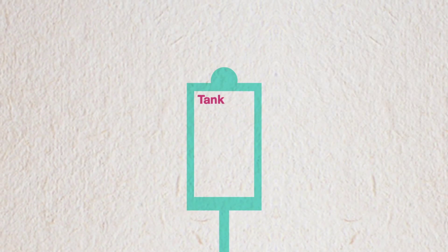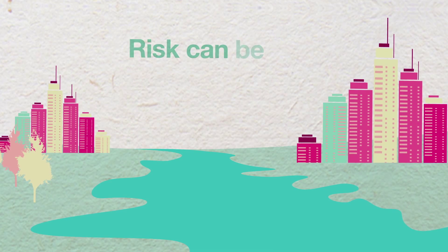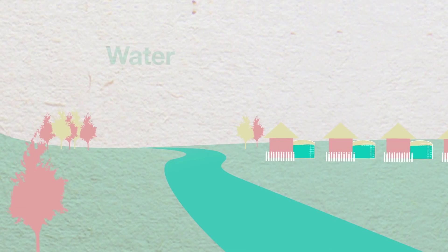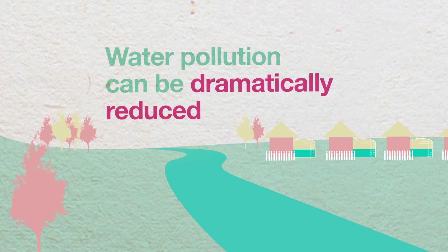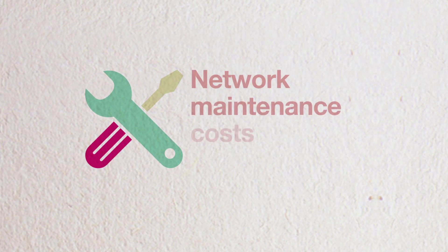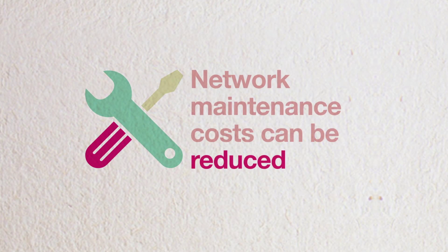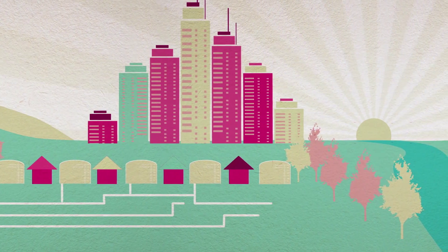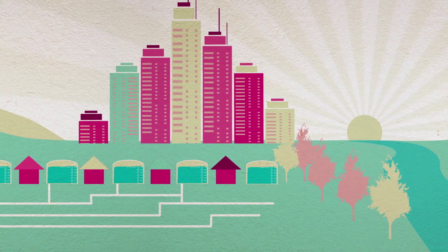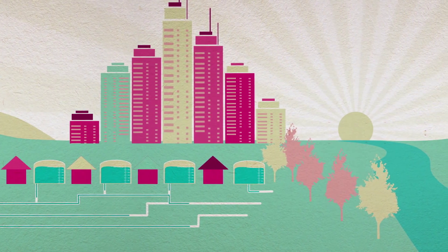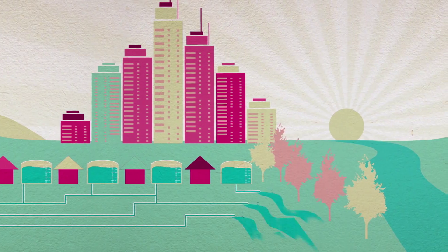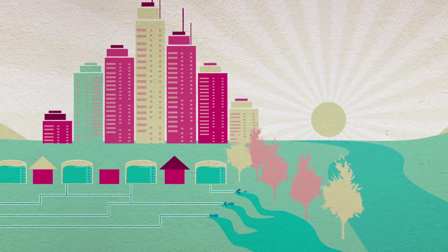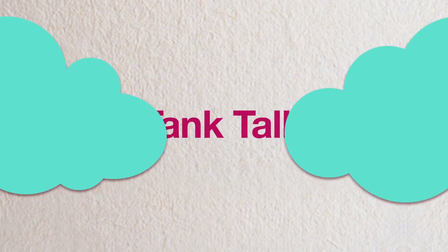By using TankTalk, risks of flooding and damage through stormwater peak flows can be minimised. Water pollution can be dramatically reduced. Network maintenance costs can be reduced. IOTA does things differently, not settling on how peak storm flows are conventionally managed with infrastructure, such as expensive underground storages or large surface retarding basins. If you're a stormwater asset manager looking for water management innovation, look for TankTalk.